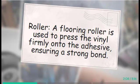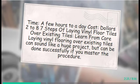Straight Edge or T-Square: These tools will help you make accurate cuts. Roller: A flooring roller is used to press the vinyl firmly onto the adhesive, ensuring a strong bond. Transition Strips: If needed, these are used to transition between different types of flooring or between rooms. Time: A few hours to a day. Cost: $2 to $8.